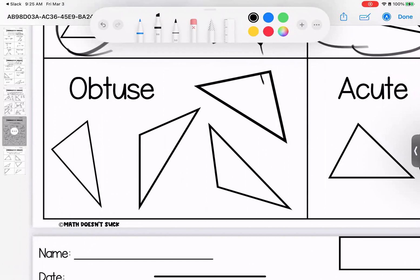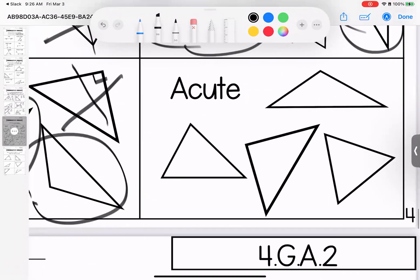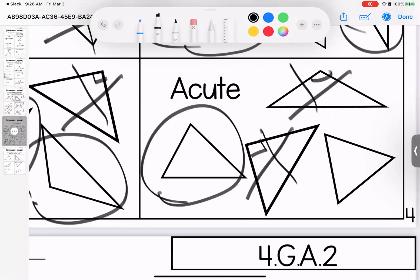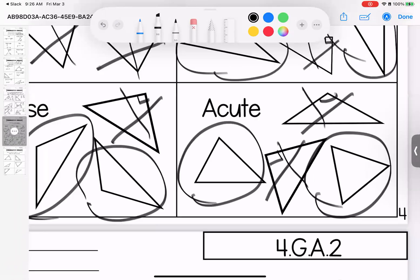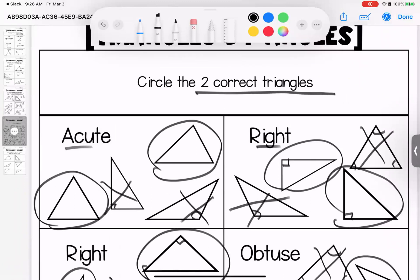I'm looking for obtuse. I see a right. I see acute. Oh, these two are correct. Over here, I'm looking for acute. This is obtuse. This is right. These two are acute. Any questions on these? Bring them with you to class.